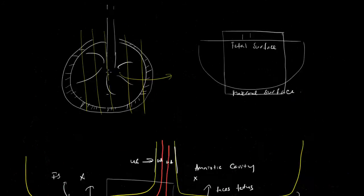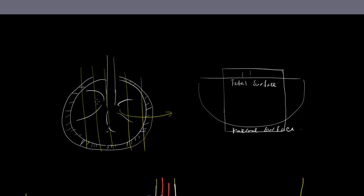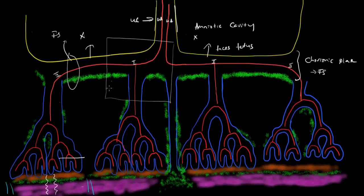If you ever look at a placenta from the fetal surface, you can see that before the vessels dive down and give rise to the cotyledons and lobules in the parenchyma, the arteries and veins coming off the umbilical cord ramify in almost a radial pattern on the fetal surface. They run through the chorionic plate before they dive down into the depths of the disc. In cross-section, here are the vessels ramifying through the chorionic plate. The side of the chorionic plate that faces the fetus is the amnion, and then there's connective tissue.